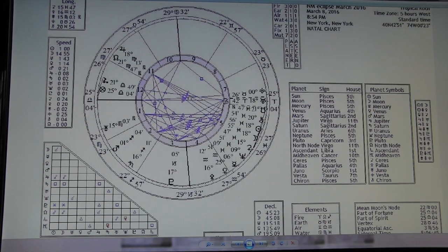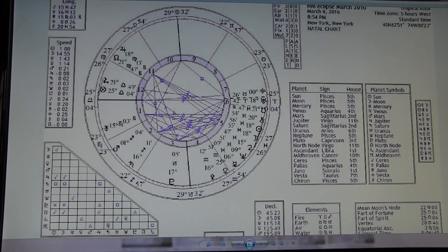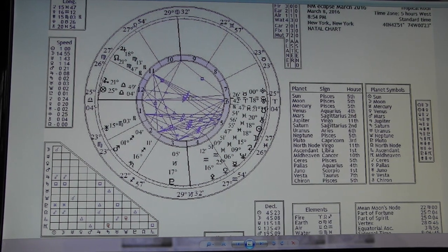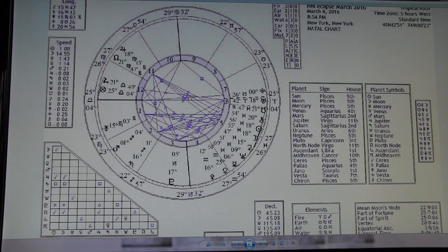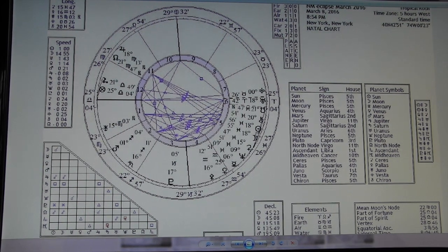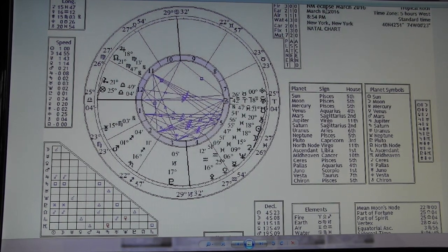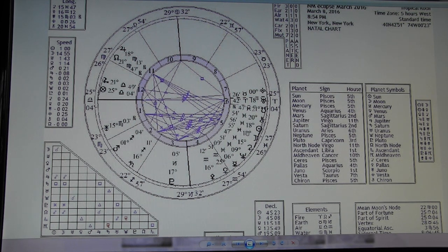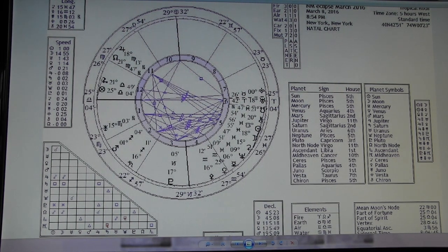Hi everyone, thanks for joining me for the new moon chart for March 8th, the new moon eclipse. It's going to be in Pisces at 18 degrees, not 8 degrees, though it's on March 8th, that's why I'm wanting to say that. 8:54 p.m. Eastern Time, times will vary. Well, this is it.